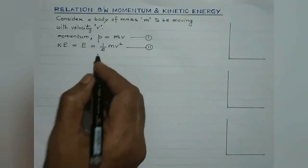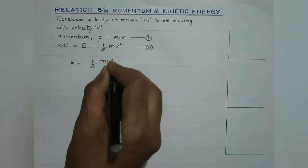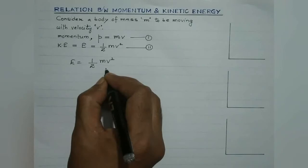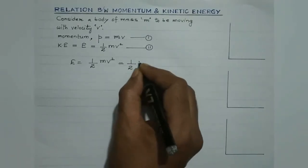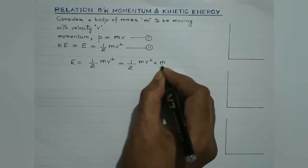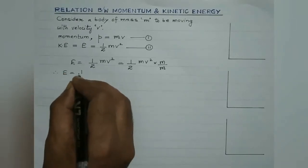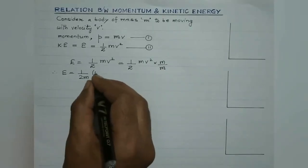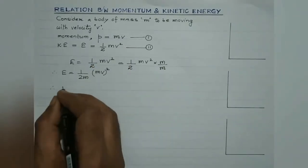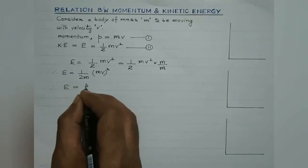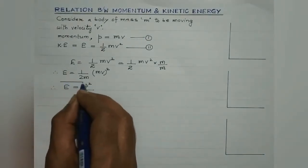We need to determine the relationship between kinetic energy and momentum. E is equal to 1/2 mv square. What we do is multiply and divide both numerator and denominator by m. So what we get is kinetic energy equal to 1/2 multiplied by m squared v squared over m, which gives us (mv)² over 2m. This is the relationship between the kinetic energy and the momentum of a body.